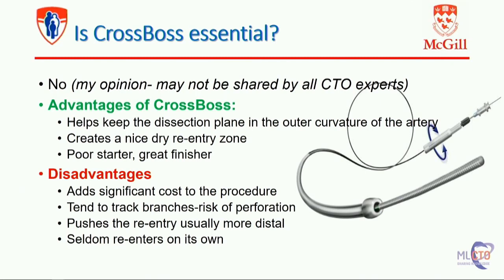Is CrossBoss essential? In my opinion — and it may not be shared by all CTO experts — I don't think it's essential in all cases. There are clear advantages of the CrossBoss: it helps keep the dissection plane in the outer curvature of the artery and creates a nice dry re-entry zone. It's a poor starter, but we all agree it's a great finisher. However, it adds disadvantages: significant cost, it tends to track branches which can lead to perforation, it pushes re-entry usually more distal, and seldom re-enters on its own — described at 30% in initial studies, but in practice much less frequent.